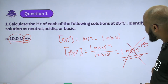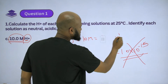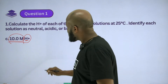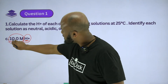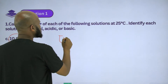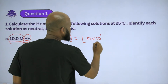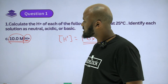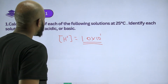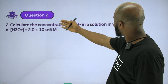The H⁺ concentration is 1.0×10⁻¹. So this is an acidic solution — a very, very acidic solution. The 10 molar H⁺ concentration confirms this is an acidic solution.